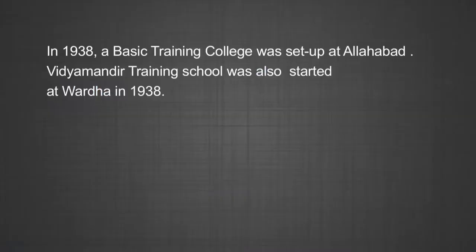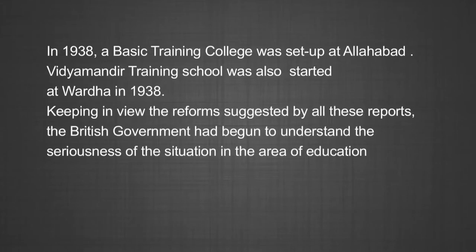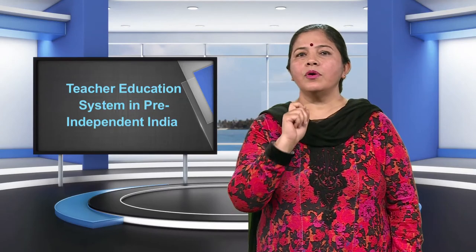In 1938, a basic training college was set up at Allahabad, and another college — the Vidya Mandir Training College — was started in 1938 at Wardha. Keeping in view the reforms suggested by all these reports, the British government began to understand the seriousness of the situation in education. Ultimately, in the mid-1940s, the Government of India realized it could no longer be indifferent to educational problems and recognized the need for radical reforms in all aspects of Indian education.